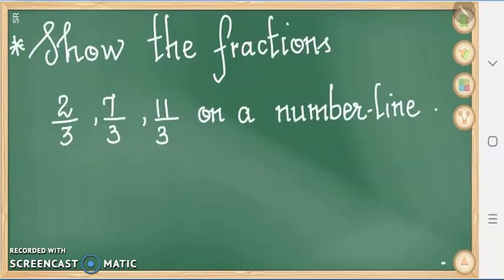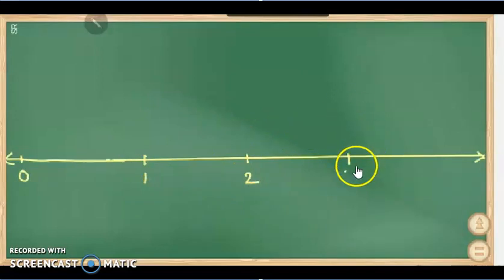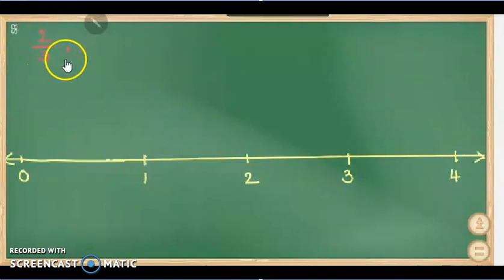Let's go to the question here. We have an example: show the fractions 2 upon 3, 7 upon 3, and 11 upon 3 on a number line. We have to draw a number line starting with 0, 1, 2, 3, and 4. The fractions we have to represent are 2 upon 3, 7 upon 3 — which is an improper fraction — and 11 upon 3, again an improper fraction.